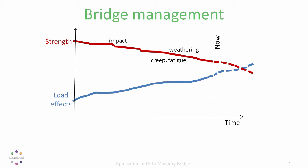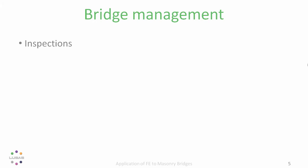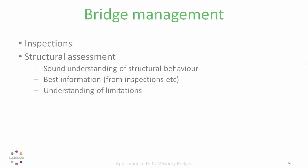For each bridge we have to decide, do we need to take any action to save the structure? If so what? It might be repair, strengthening or load restrictions for example. To decide, we rely upon inspection regimes and a structural assessment. This needs to be based on a sound understanding of the behaviour of the structure, best information about the bridge, and an understanding of the limitations imposed by uncertainty, which is inherent in studying older structures.